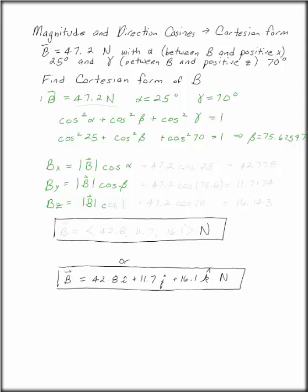We have all of these numbers. The length of B is 47.2, alpha is 25 degrees, gamma is 70 degrees, and we just found beta.